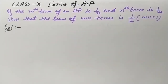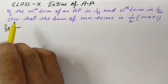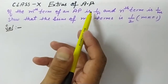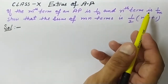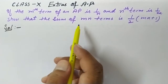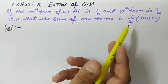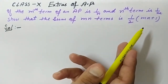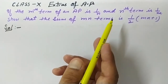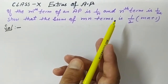Welcome to this YouTube channel. Today I brought for you an extra question of AP. The question is: if the mth term of an AP is 1/n and the nth term is 1/m, show that the sum of mn terms is (mn + 1)/2. Before doing this question, we will have two formulas with us.